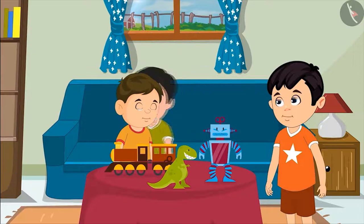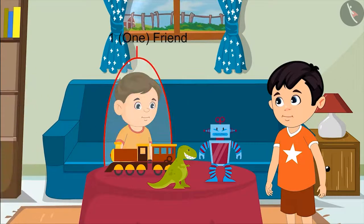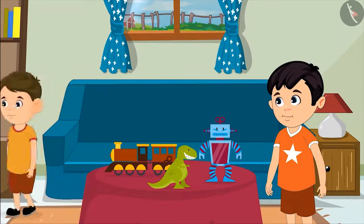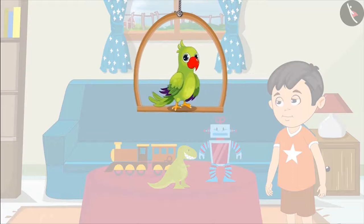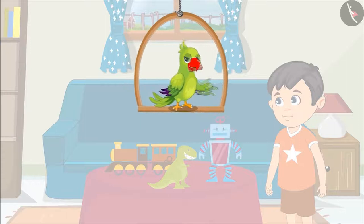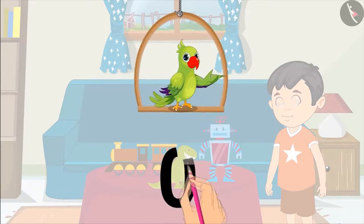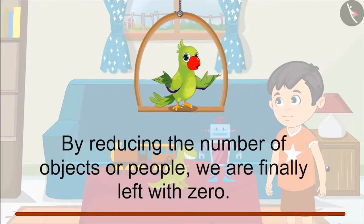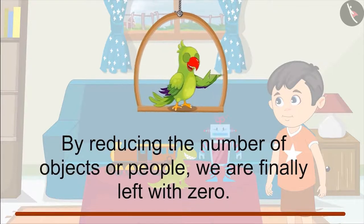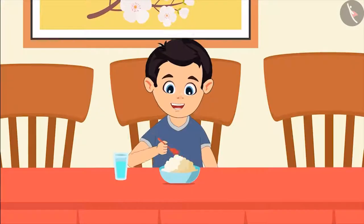Then another went, and now only one friend is left. Finally, he too went home. There are no friends left. Not a single friend being there means that at this time there are zero friends at his house. So by reducing the number of objects or people, what we are finally left with is the number zero.